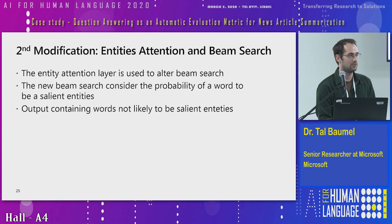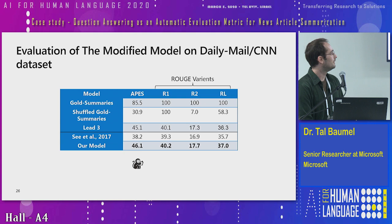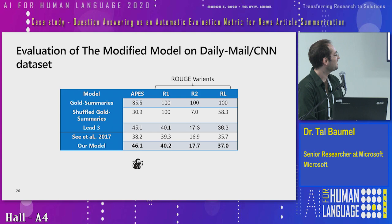We compared our model on CNN/DailyMail and got great results — actually better results, though this was before more recent work. The APES score is significantly better, and importantly, the ROUGE results don't suffer either, which is of course great.